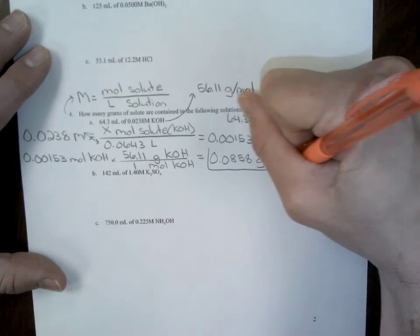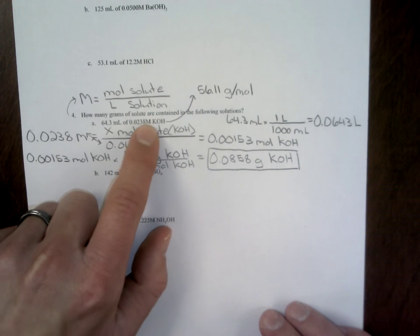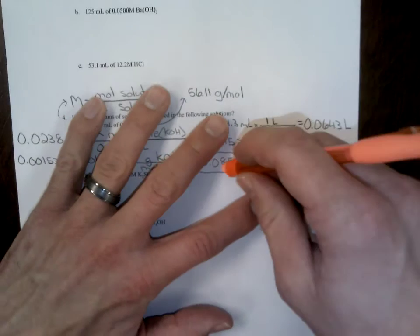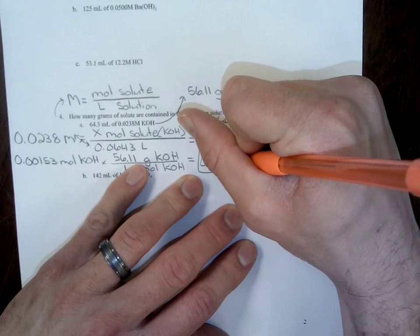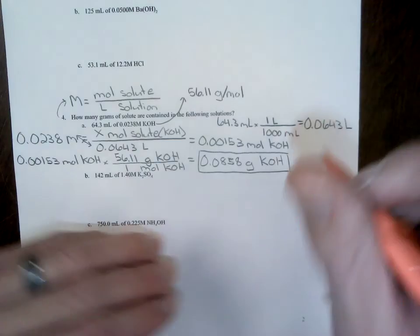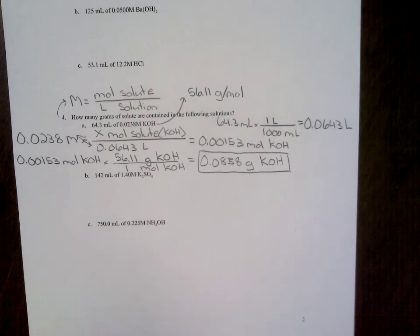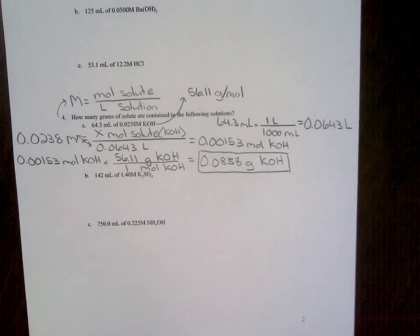The whole key about this is we need to utilize our molarity formula. So whenever you see a big M, that means we need to use that molarity formula. And just so it's clearly written, our answer again is 0.0858 grams. This is almost a backwards way or backwards method that we solved compared to that first problem I showed. I need you to do the remaining problems on your own. As always, I hope you've enjoyed this. And if you haven't done so already, make sure you subscribe.